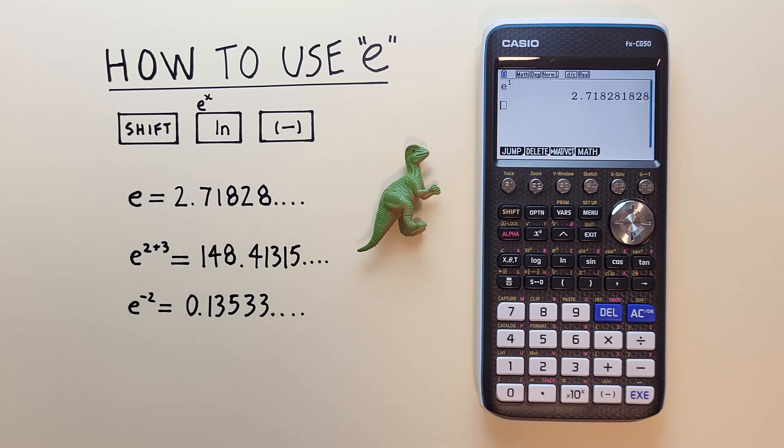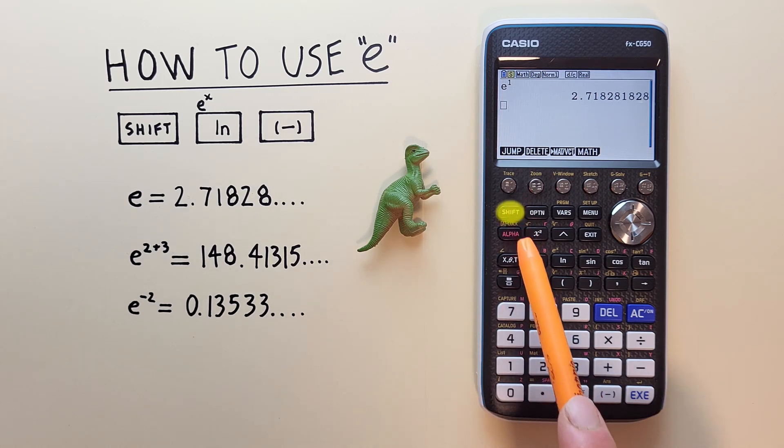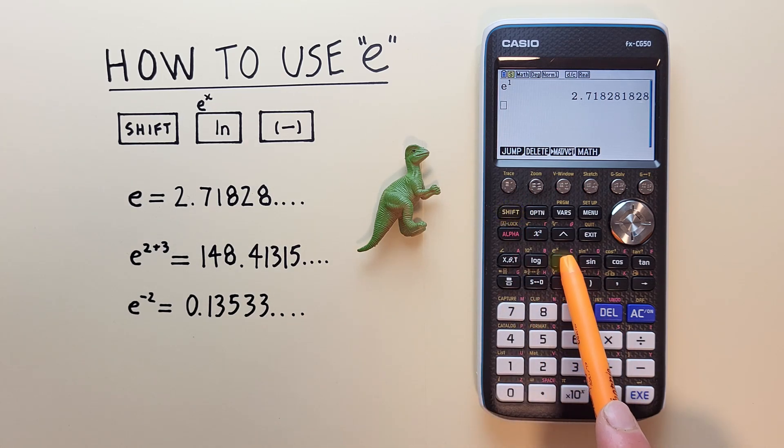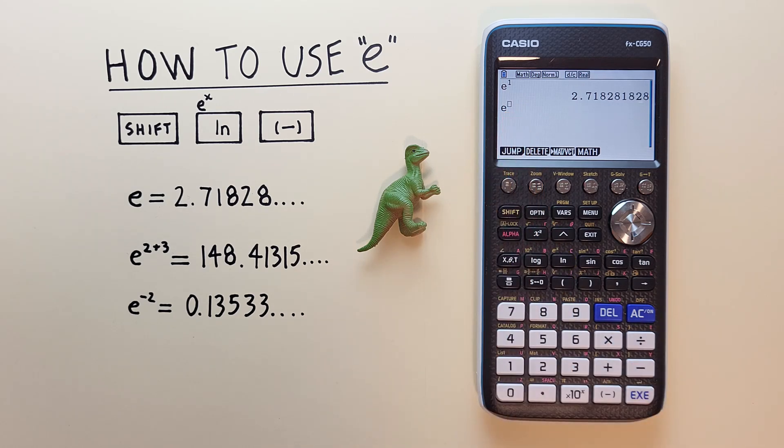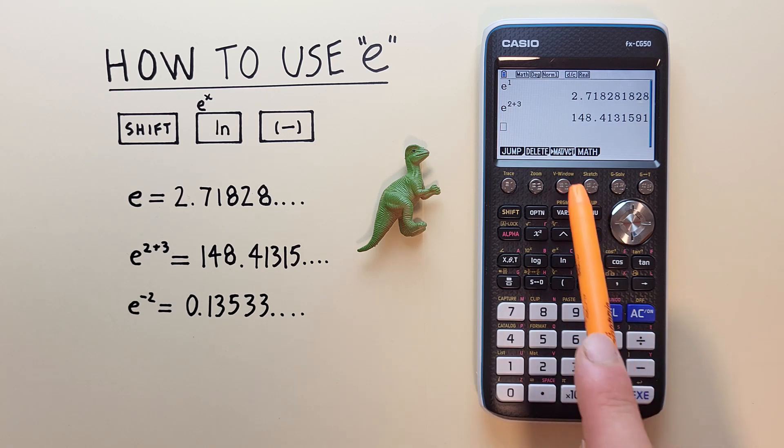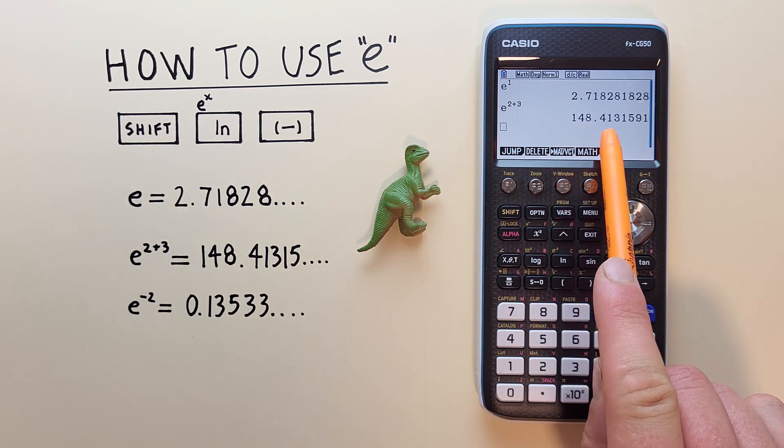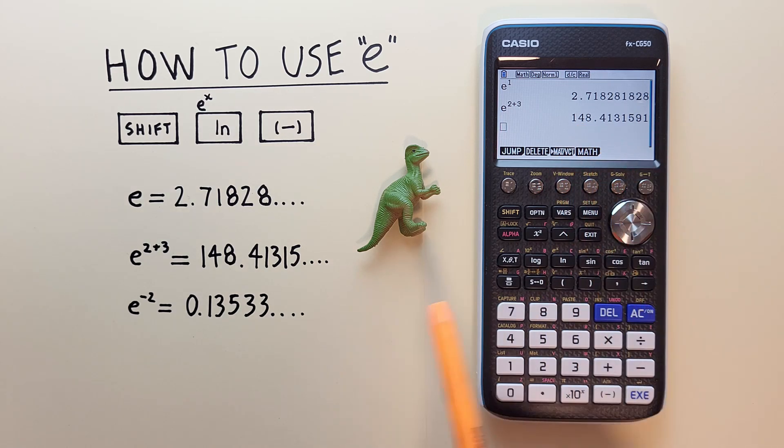What if we want e with an exponent, like for example, e to the power of 2 plus 3. Again, to do this, we press shift, and then the natural log, or ln key, to get the e with the exponent box. And then we enter our exponent of 2 plus 3. Hit the exe, or execute key, and we get a result of 148.413159 etc, which is correct.